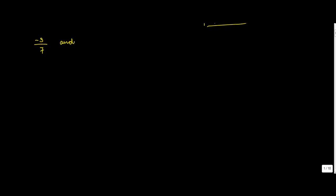But life is not always that simple. Suppose I were to ask you: there are two rational numbers, minus 3 upon 7 and 1 upon minus 14 — which one is greater? Let's complicate it a little bit with this kind of rational number expressed in p upon q form.